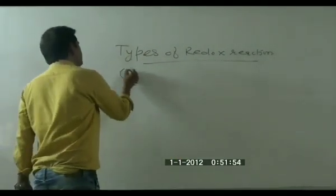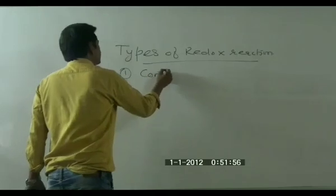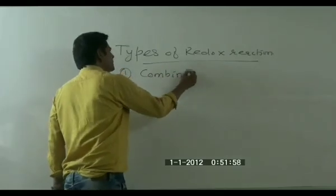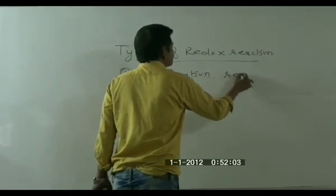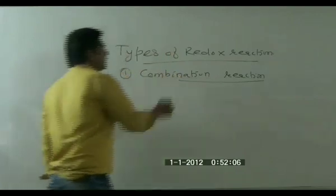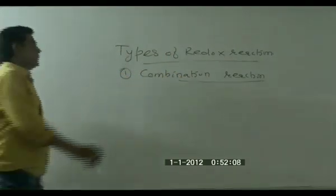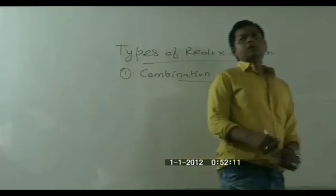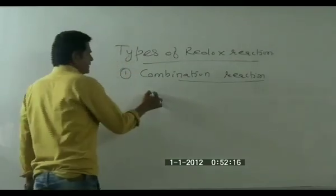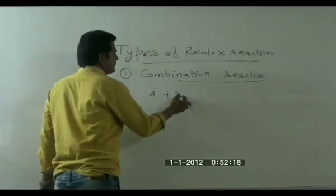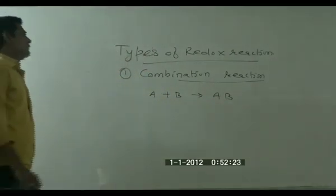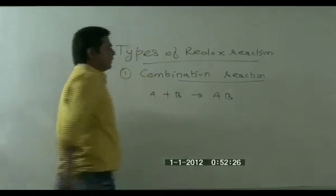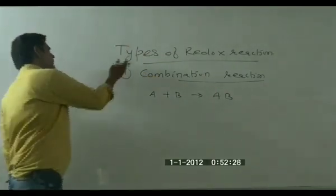The first type is combination reaction. Such reactions we have already learnt in class 10. Combination reaction — when we have a single product formed, that is a combination reaction. Here A and B combine to form AB. So we have a redox reaction here as a general example of a combination reaction.